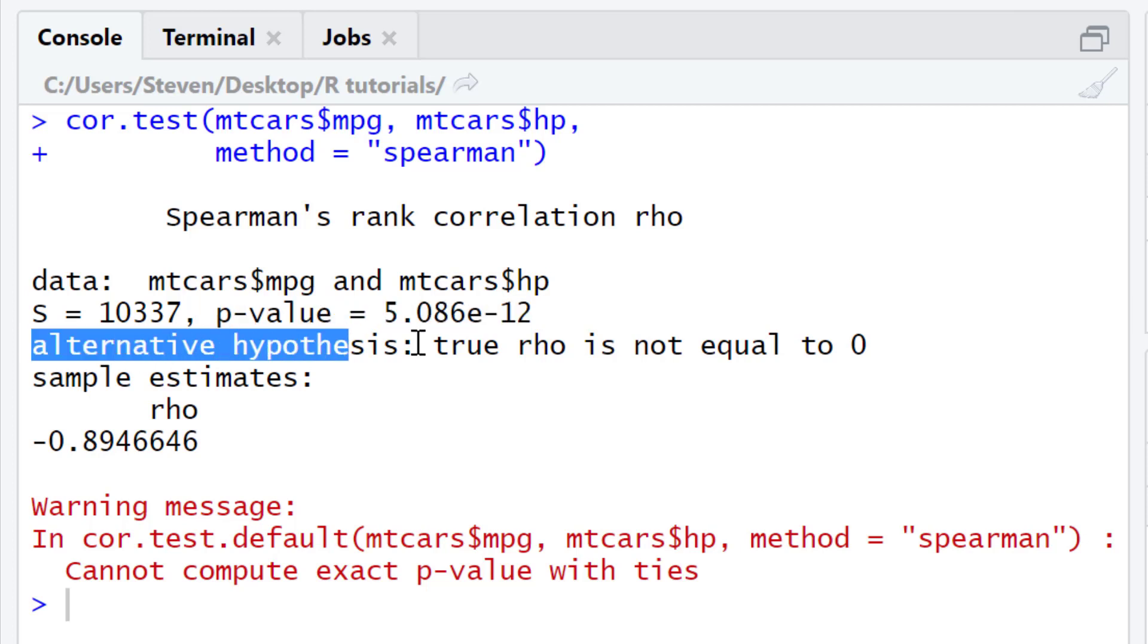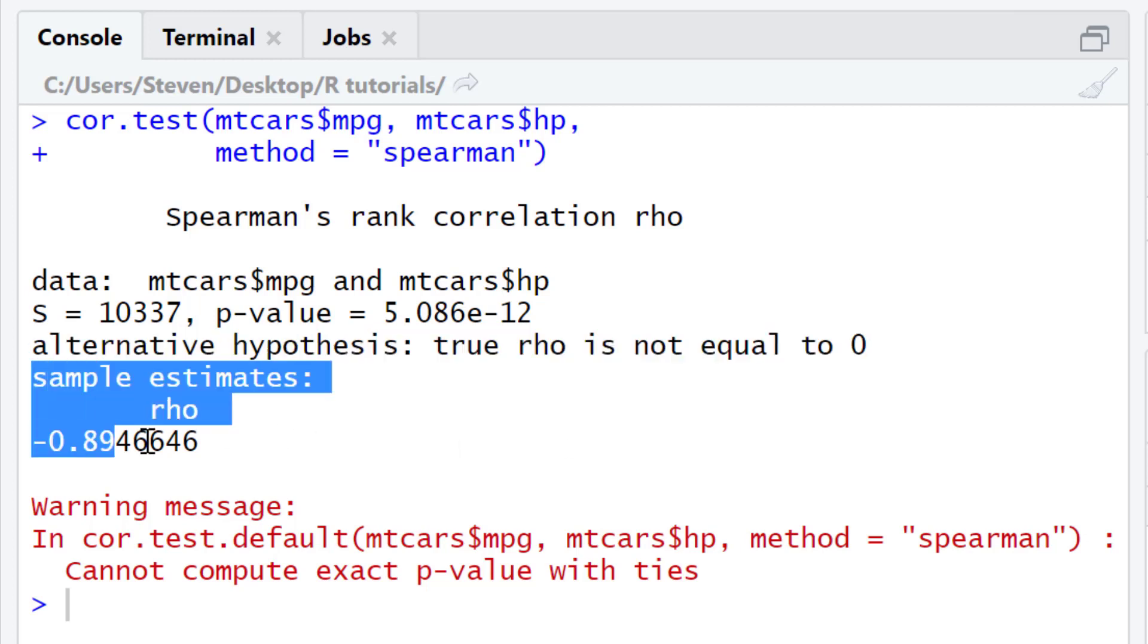Under this you'll see the alternative hypothesis, which in this case is true Spearman rank correlation is not equal to zero. This is because this analysis is two-sided. If you want to perform a one-sided analysis, I'll show you how to do that shortly. Then lastly there's the sample estimates. This number here is the Spearman rank correlation coefficient value.